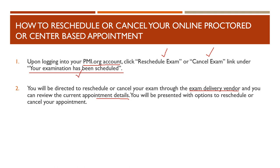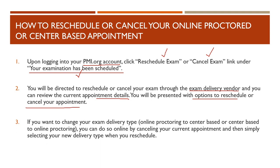You can review the current appointment details since you have already scheduled your exam — it will show the details for your current appointment. You will then be presented with options to reschedule or cancel your appointment. If you want to change your exam delivery type — say from online proctoring to center-based or from center-based to online proctoring — at pmclounge.com we always suggest people take the center-based exam. With online proctoring, your laptop, battery, and internet connection are all your responsibility, but at the exam center none of that is your concern.